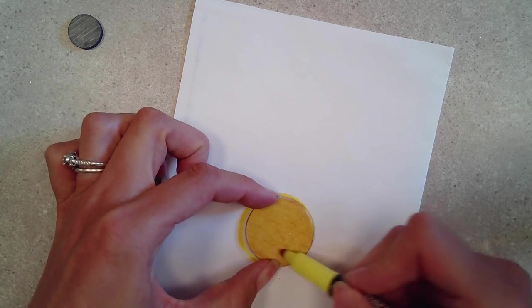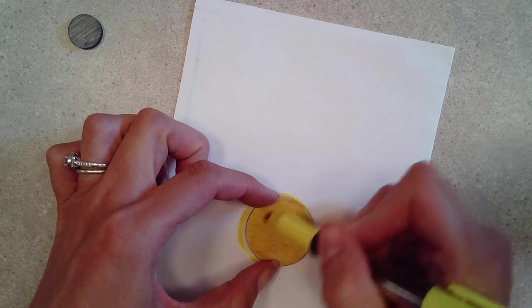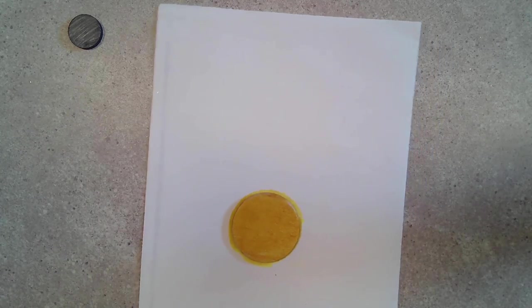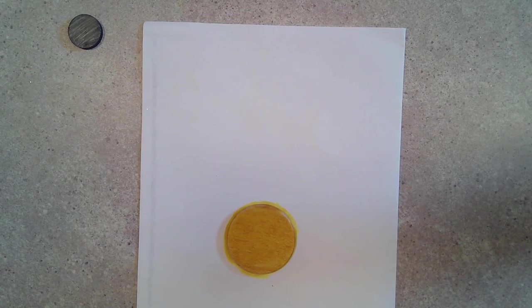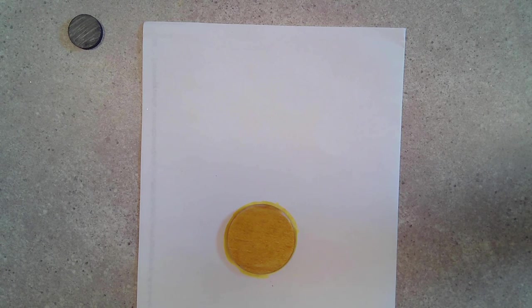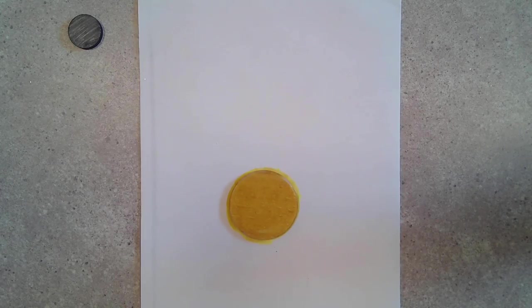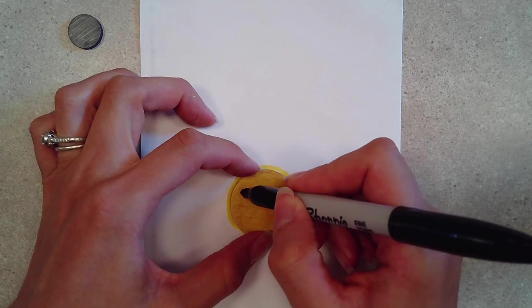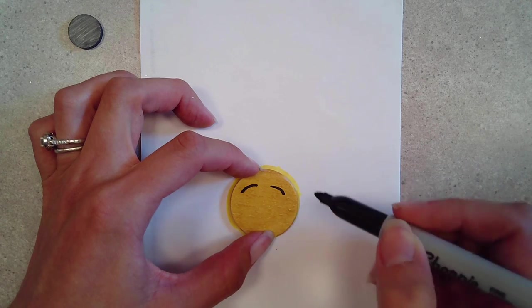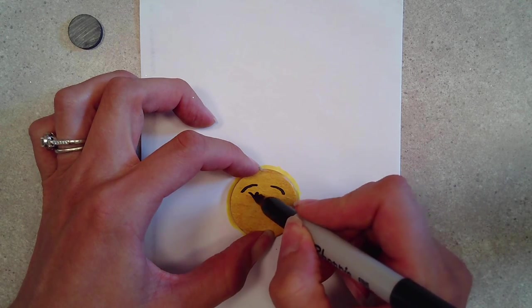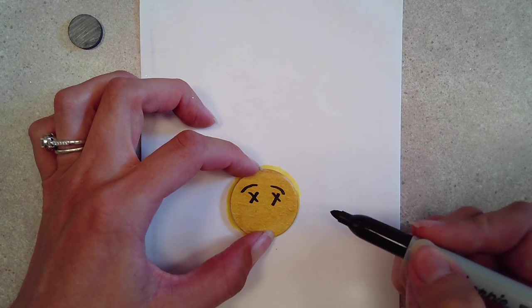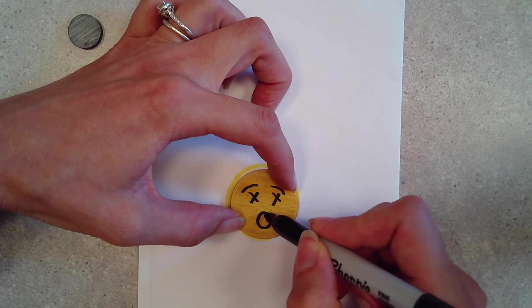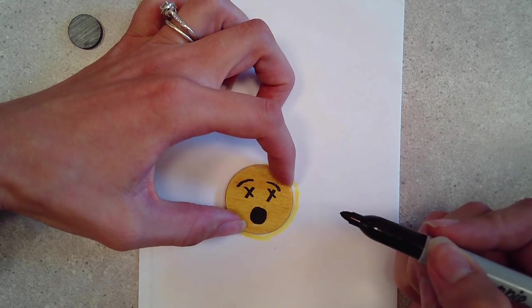You don't really have to do anything to the back because that's where you're going to put your magnet. If you're using the paint instead of the marker, you'll have to wait for it to dry before you add the eyes and the nose or the heart or whatever you want to do. So I'm going to do a super easy emoji expression, the surprised expression. I'm going to take my Sharpie and do the eyebrows, the X's for eyes, and a big surprised mouth, a big circle.